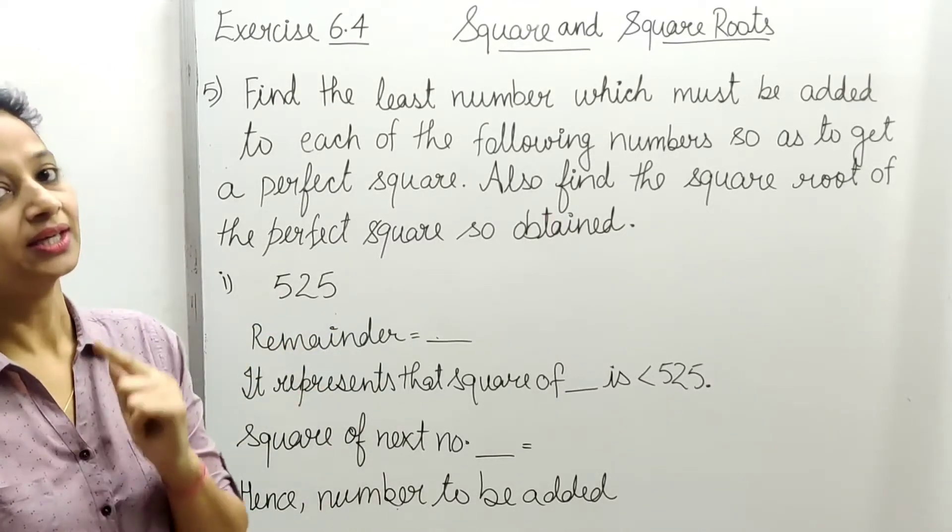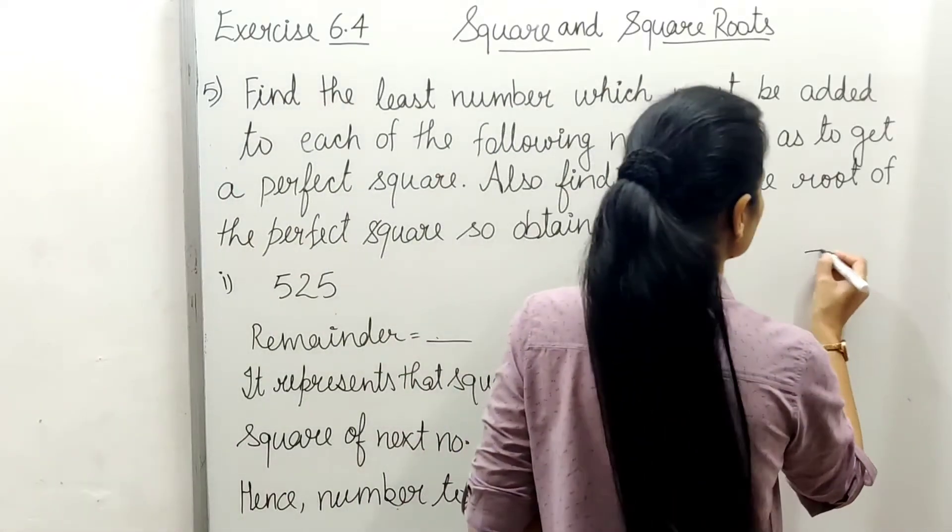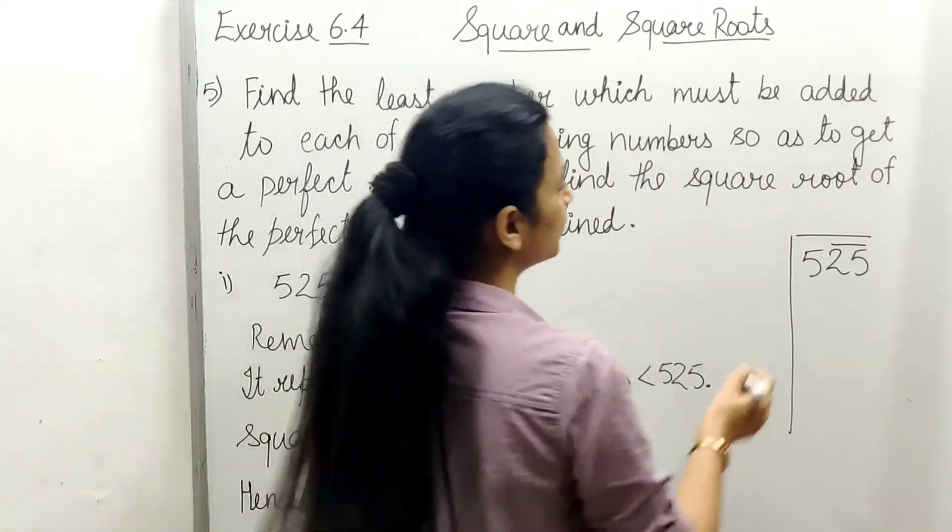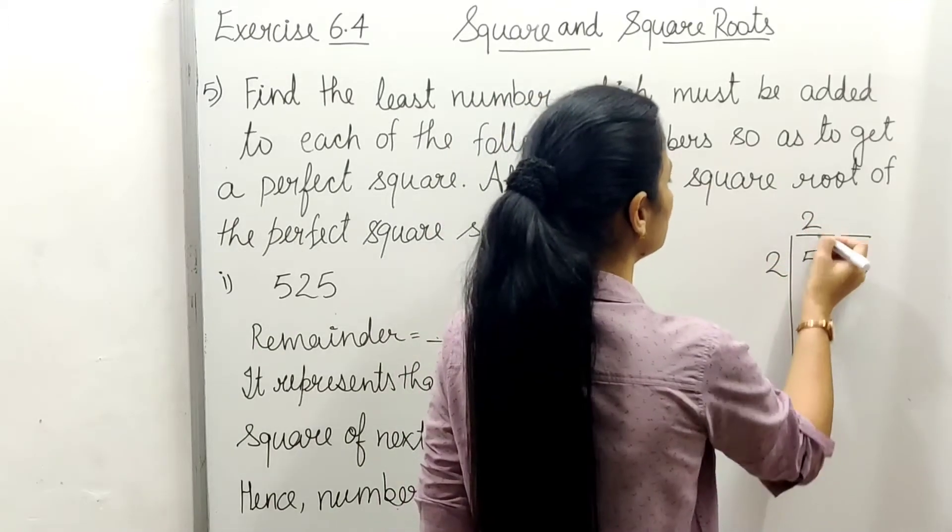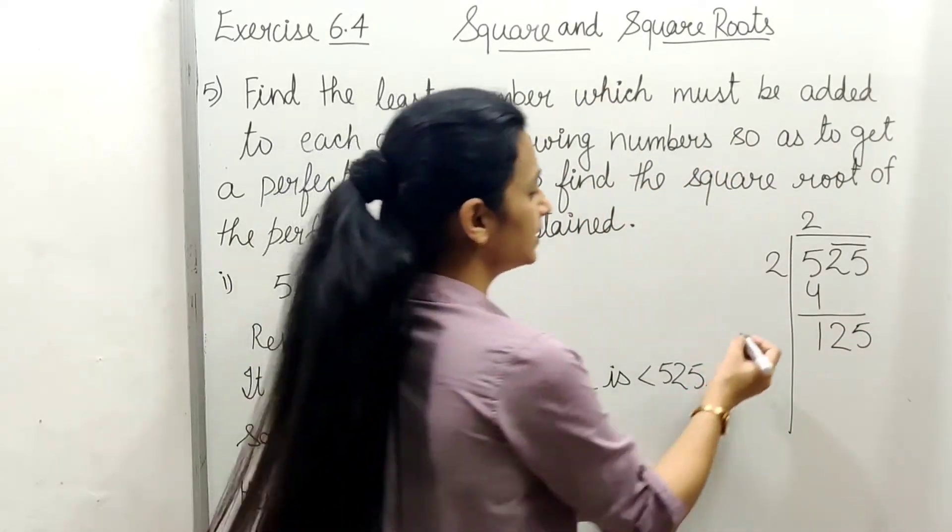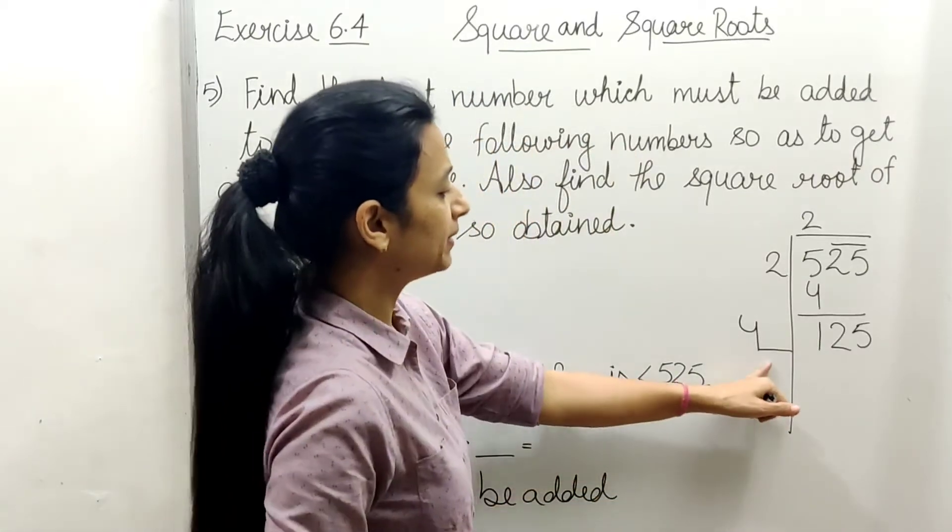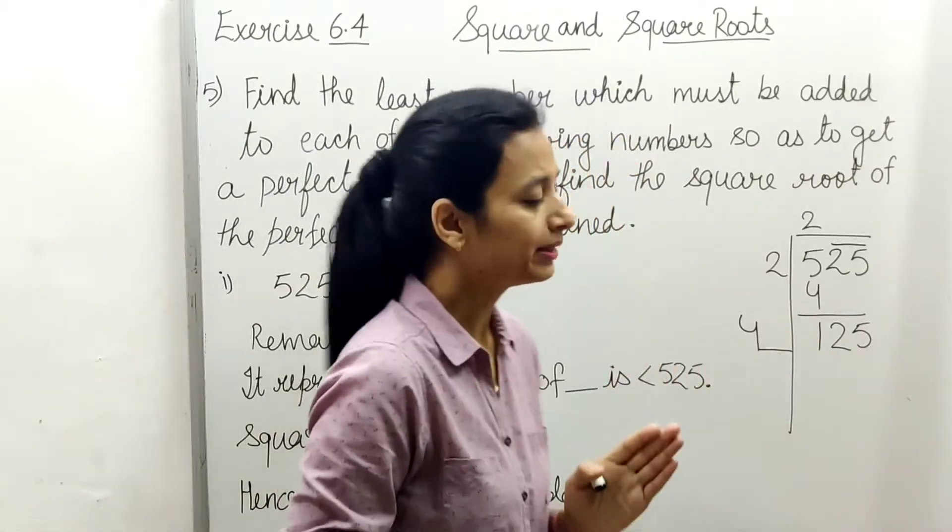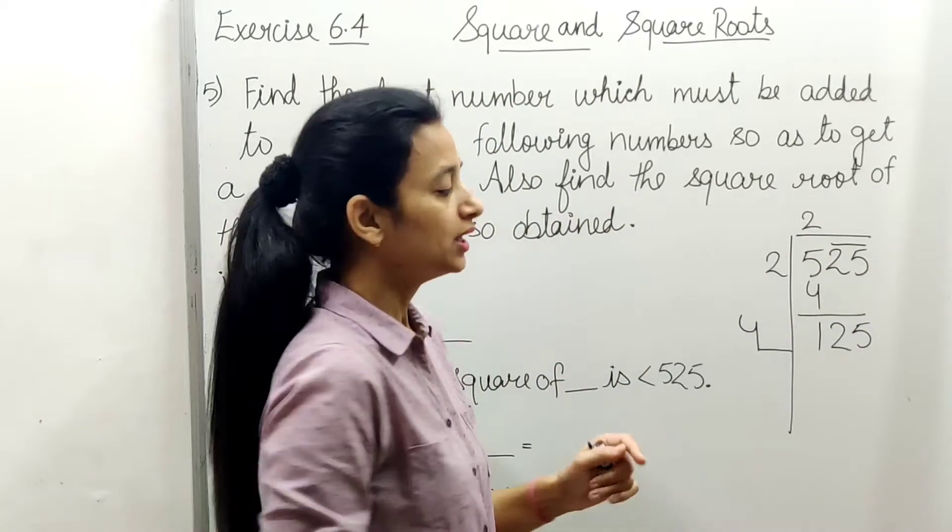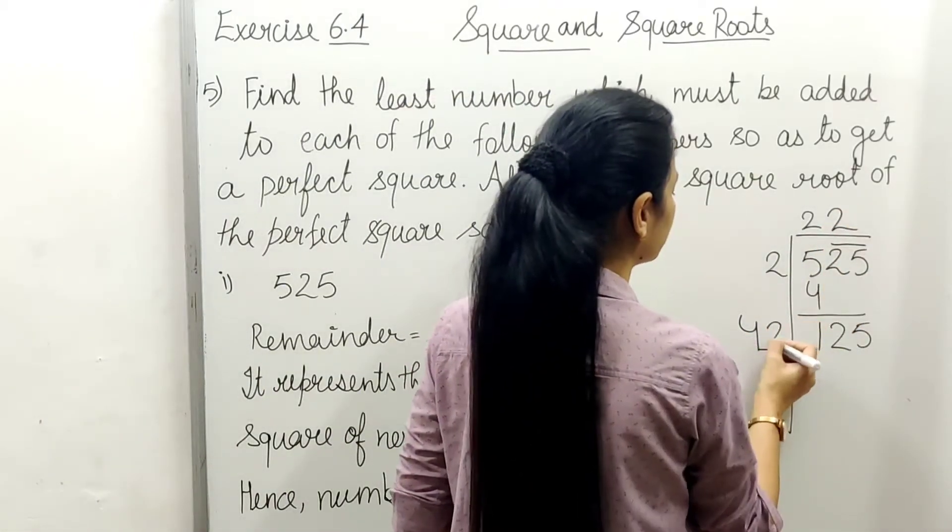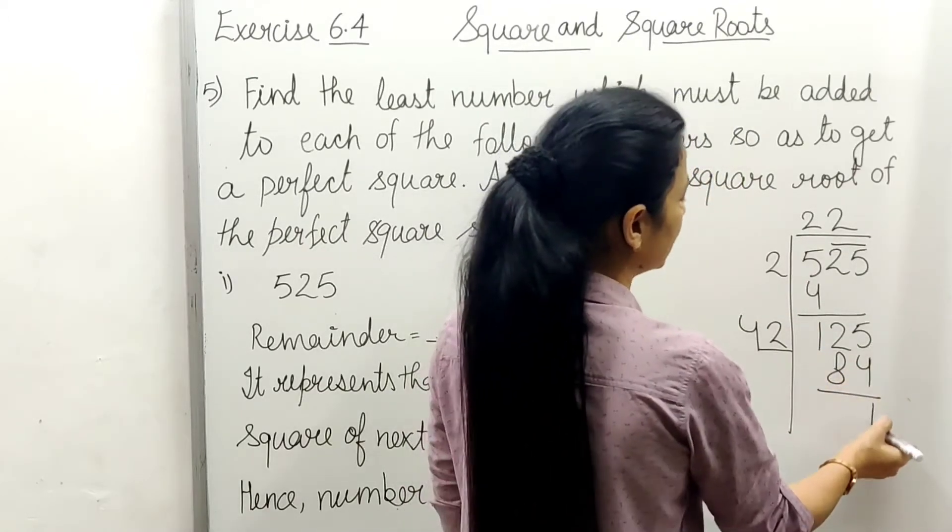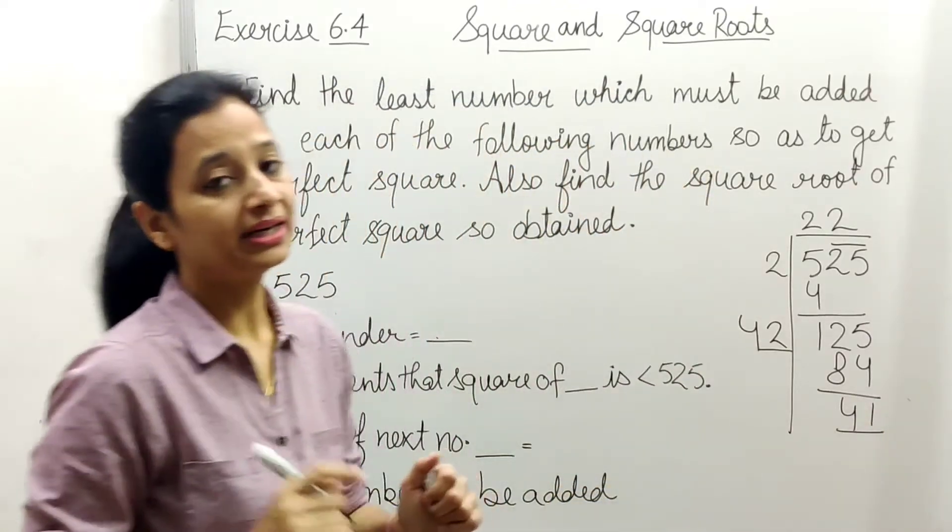We'll find the square root and then check what least number when added gives a perfect square. Then we'll find the square root of that perfect square. Let's start with the first one, finding square root of 525. Using long division method, pairing: 2 goes into 5 twice, 2×2=4, minus gives 125. New divisor is 4.